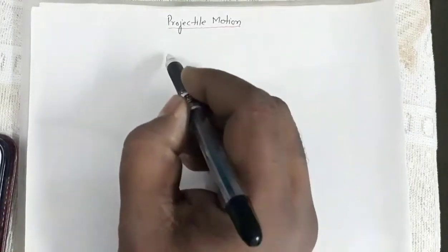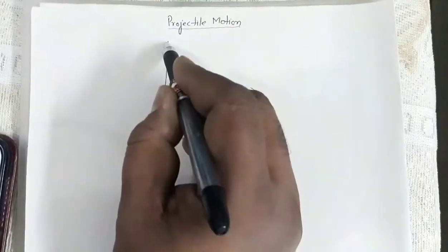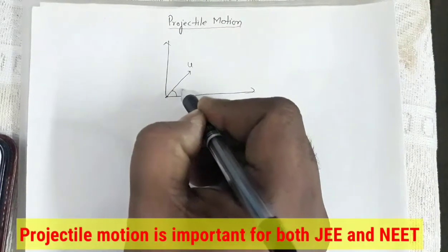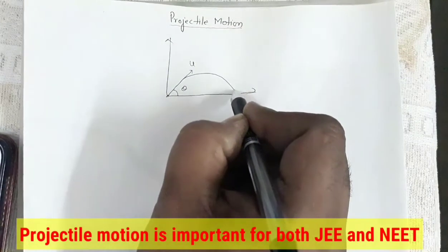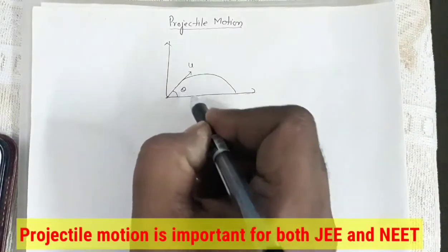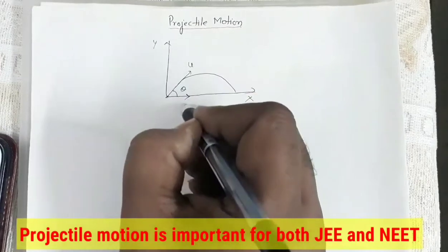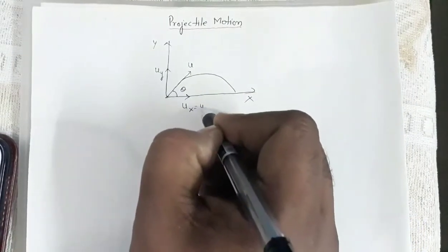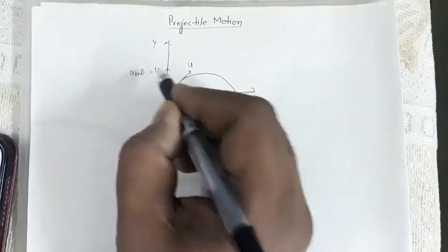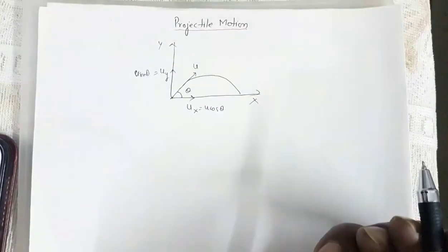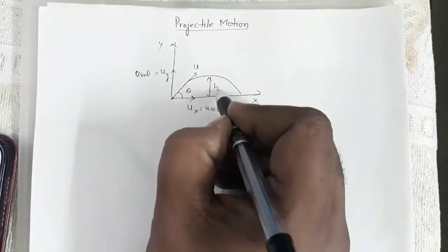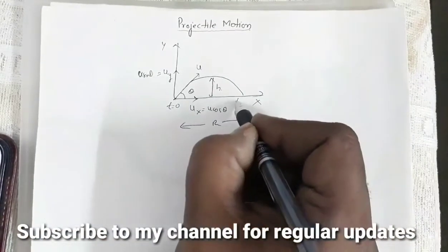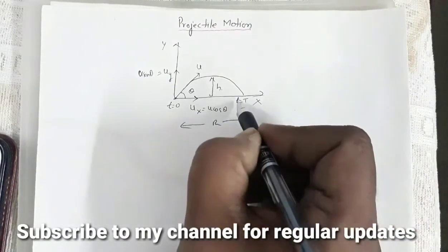Now let us consider a case wherein a projectile is projected with initial velocity u, and theta is the angle of projection. This is the trajectory of the projectile. The x-axis and y-axis are set up, so the initial velocity along the x-axis is ux and along the y-axis is uy. ux is u cosθ and uy is u sinθ. This height is h, r is the range, time t = 0 at the launch, and capital T is the time of flight.